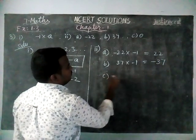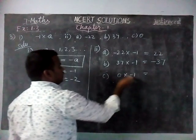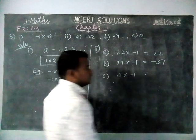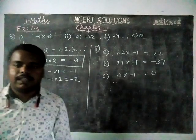And option C, 0 into minus 1. And I already told you, if you are multiplying 0 with any number, you will get 0. And that's all students, thank you.